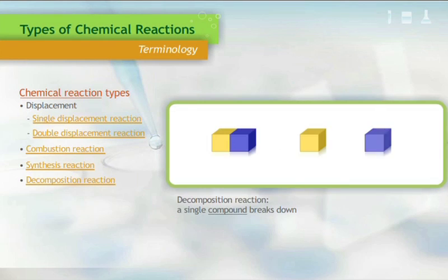A decomposition reaction is the opposite of a synthesis reaction. It takes place when a single compound is broken down into two or more single elements or compounds. For example, the single compound yellow and blue block breaks down into a single yellow block and a single blue block.